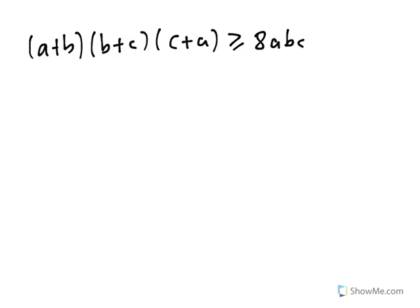The second example: prove that (A+B)(B+C)(C+A) ≥ 8ABC for positive A, B, C. This can be solved using a similar idea — applying 2-term AM-GM to each factor and multiplying side by side, just like the previous problem.